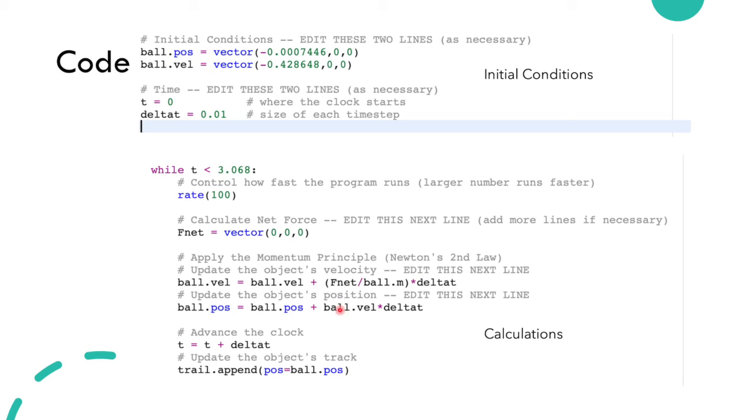And the position of the ball is the position of the ball plus the velocity of the ball times delta t. And to advance the clock, t equals t plus delta t, which is this 0.01, and as we go frame by frame this time changes.